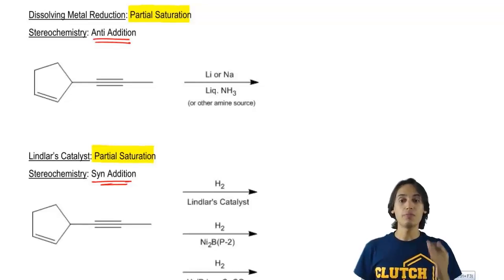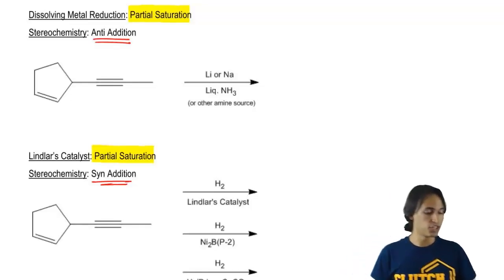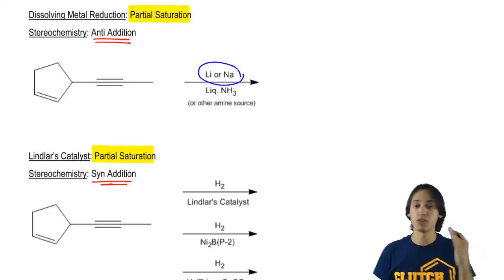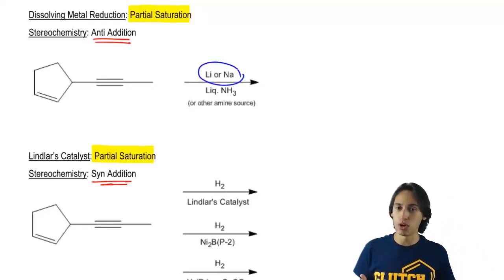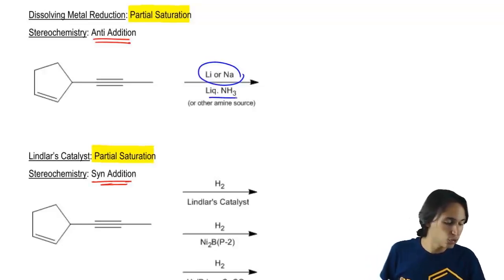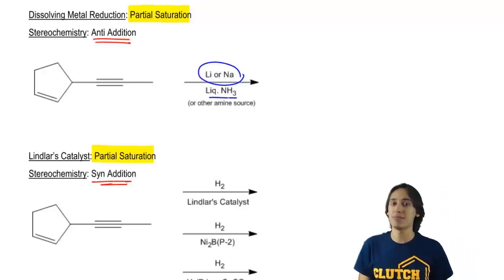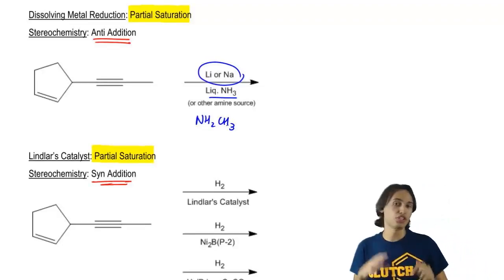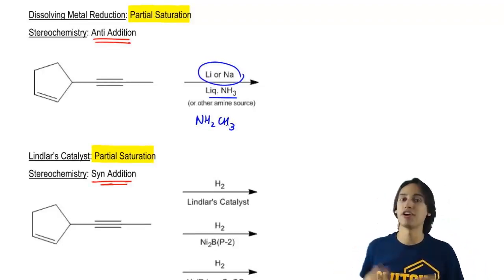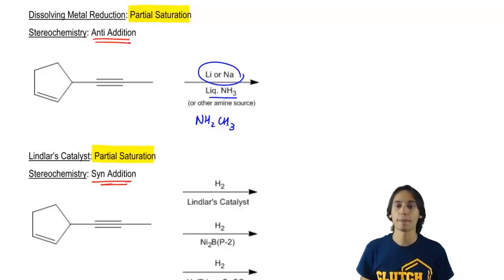The first one's called dissolving metal reduction. Dissolving metal reduction is just another name for these reagents. What it is is that we have some kind of metal, lithium or sodium, in some kind of liquid amine source. Many times that amine is going to be NH3, but there's a lot of other things it could be. It could be NH2CH3 or just any kind of usually primary or secondary amine.